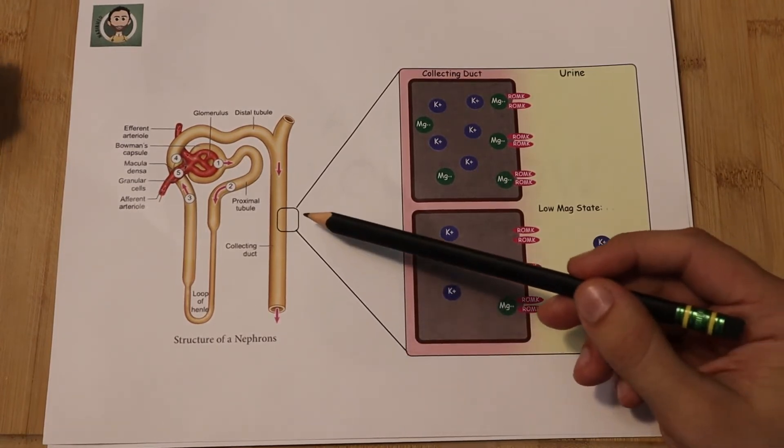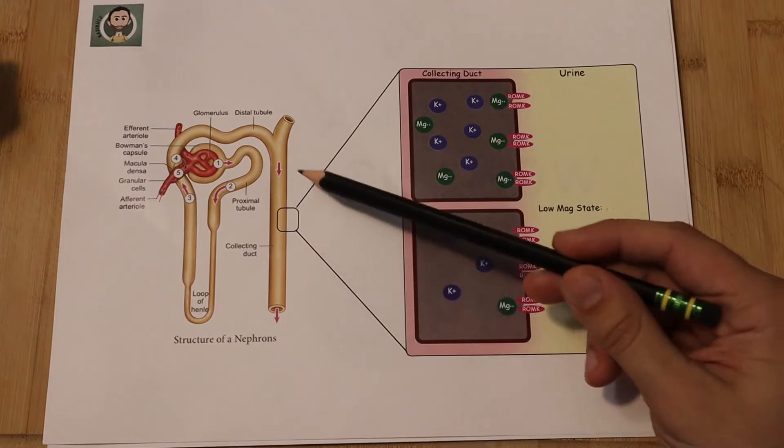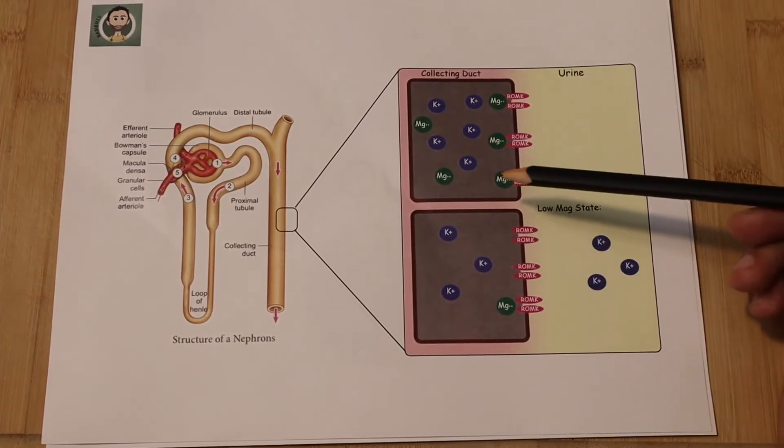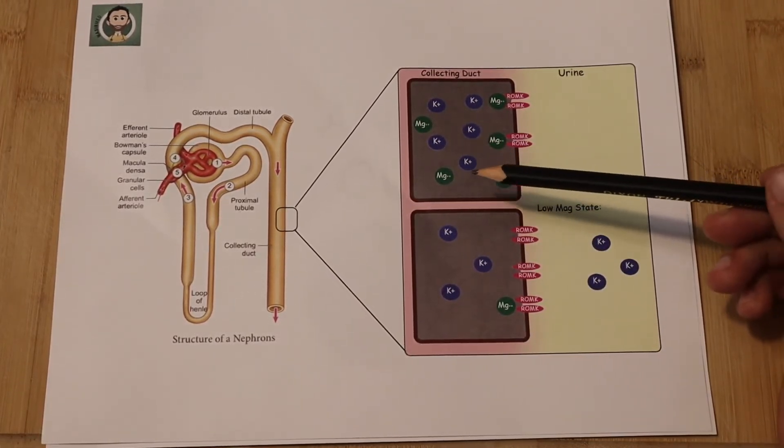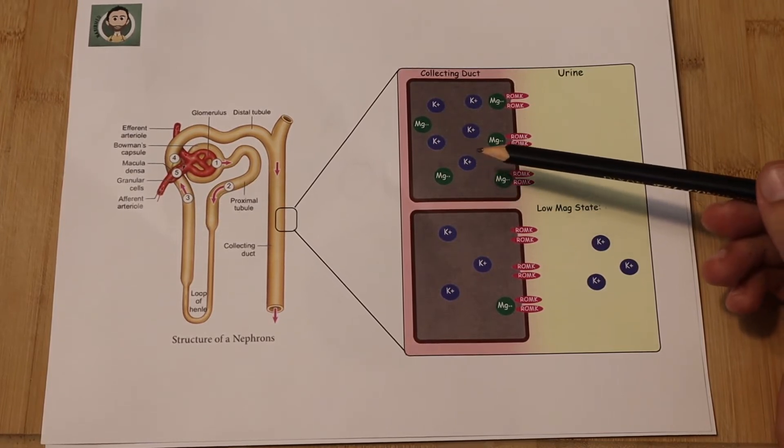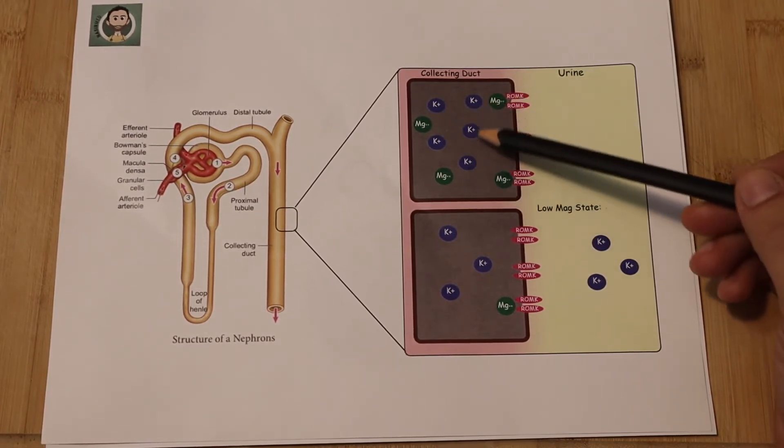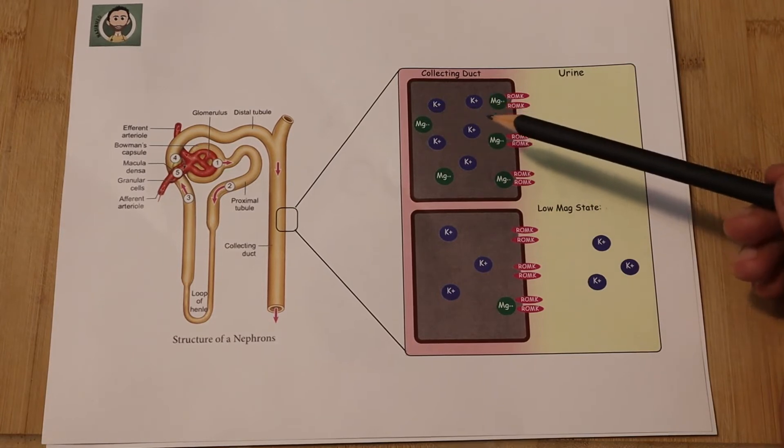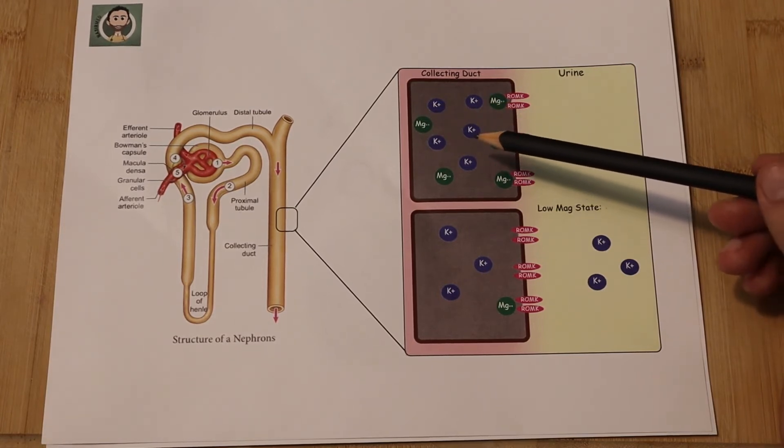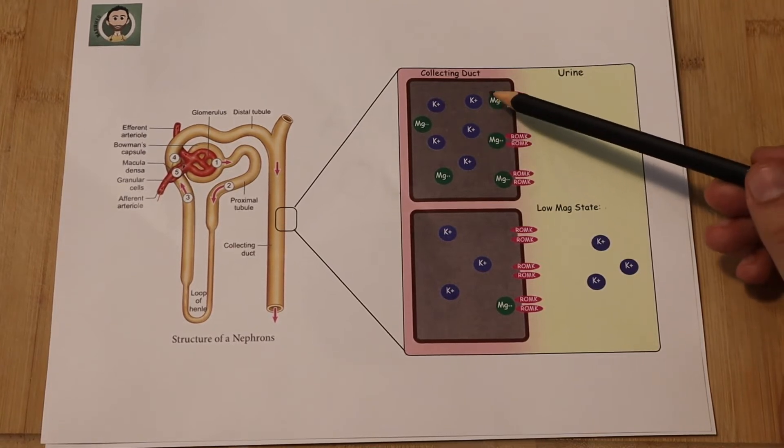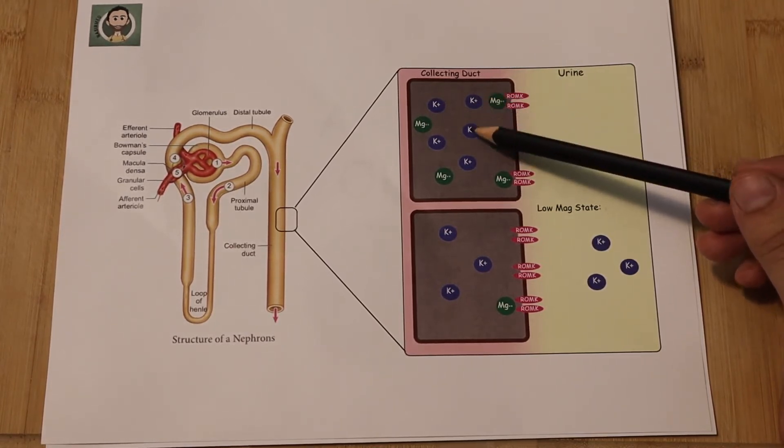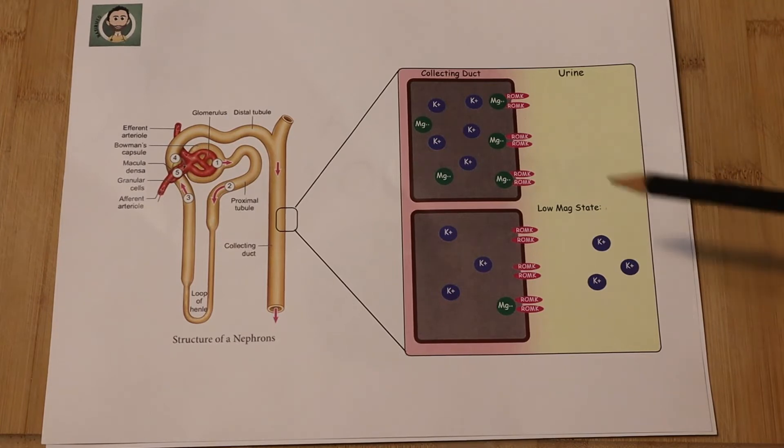Paying more close attention to the most distal part, which is the collecting duct. And you also know from MED1 that potassium level is heavily concentrated inside the cell thanks to the sodium-potassium ATPase pump. And that creates a heavy electrical gradient favoring the efflux of those potassium ions outside the cells into the urine.